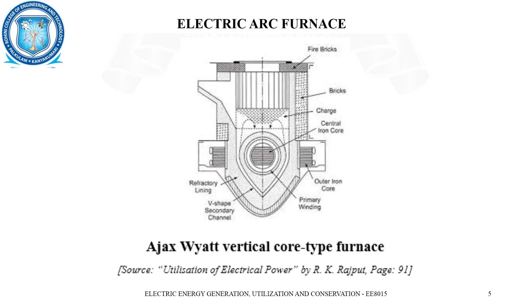The furnace has a primary winding as well as a secondary channel, with a central iron core in the middle. Surrounding the central core is the primary winding, and after that is the V-shaped secondary channel, covered with refractory lining — because the heat will be very high and must not affect the external environment. The central iron core is connected to the outer part through the outer iron core material. The charge is placed within the V-shaped container, protected with metal fittings at the top, and fire bricks are placed at the surrounding level. In this way, the electric arc furnace safely heats the charge.